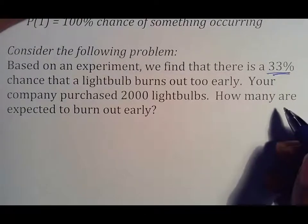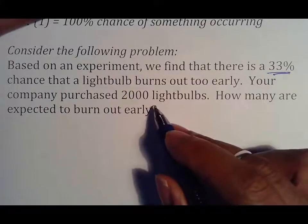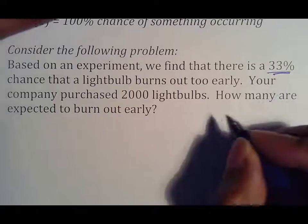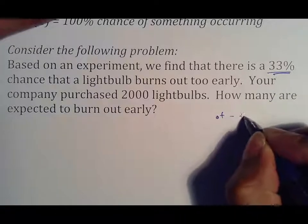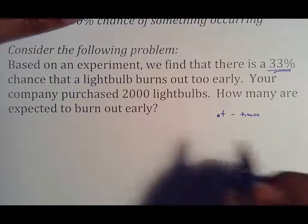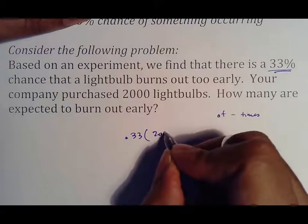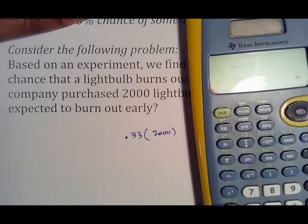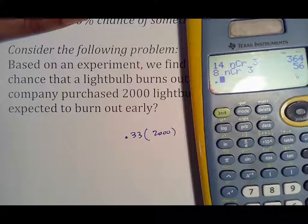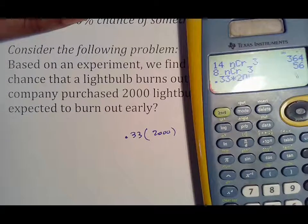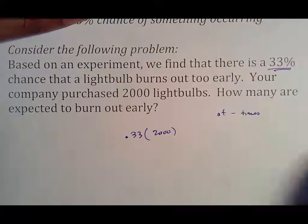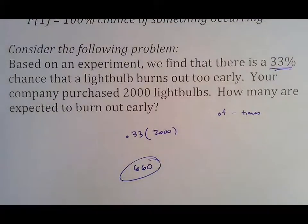Your company purchased 2000 light bulbs. How many are expected to burn out early? Well, 33 percent. This is using probability here. 33% chance a light bulb burns out too early and you have 2000 light bulbs. Typically a percent is a percent of something. The word 'of' if you remember means times, which means I would put 0.33 times 2000 to find out how many of those light bulbs will probably burn out too early.